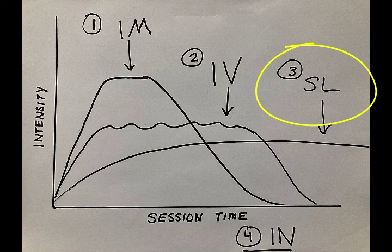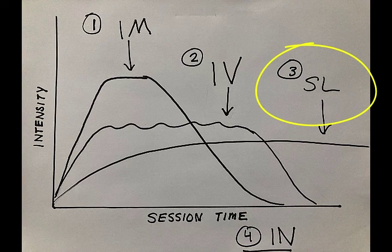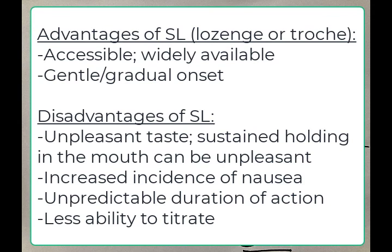Moving on to number three, the sublingual route, the troche or the lozenge. Advantages of this are, again, accessibility. This is widely available and relatively affordable.